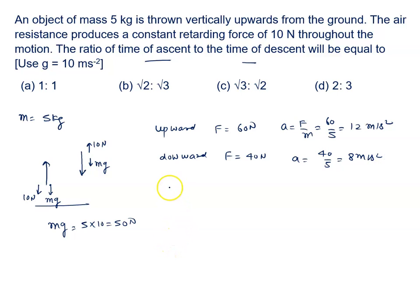So, displacement is the same either in the upper direction or downward direction. S is given by, when upward direction, it is given by UT minus half AT square, but when it is in downward direction, it is given by UT plus half AT square.